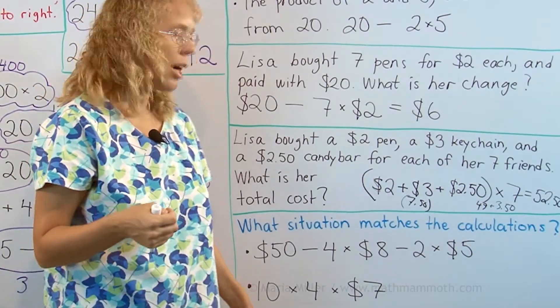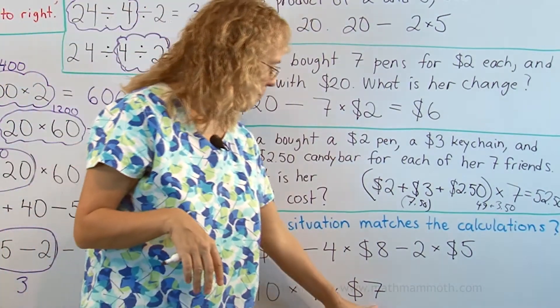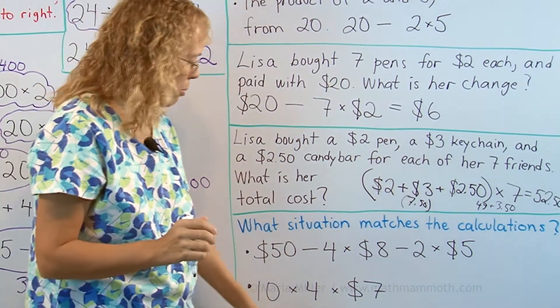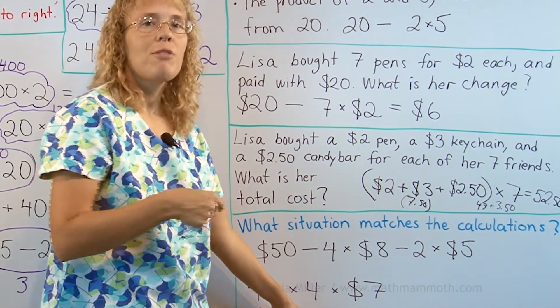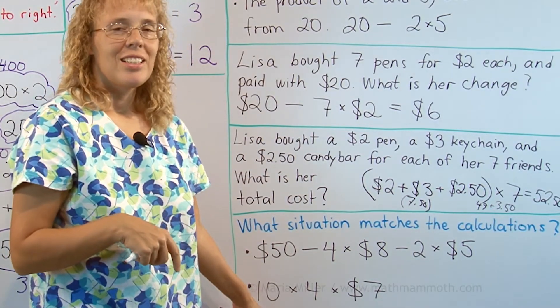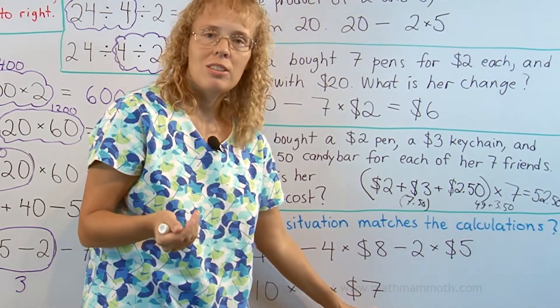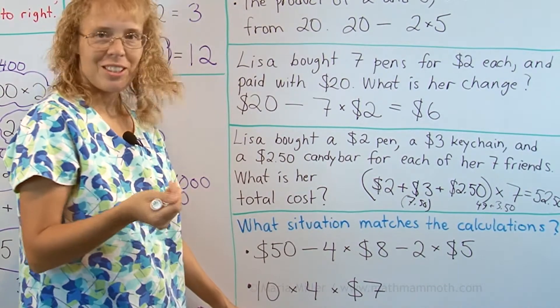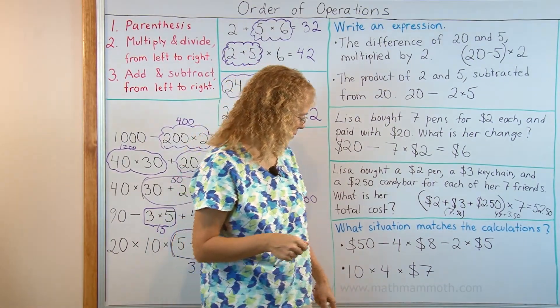And this one here, 10 times 4 times 7 dollars. If we go shopping and let's say something costs 7 dollars, an object costs 7 dollars, but the person buys 4 of them, but they buy 4 of those objects for 10 of their friends or for 10 people. So they end up buying 40 of those. Let's say for example that the workbook is 7 dollars and a teacher buys 4 workbooks for each of her 10 students.